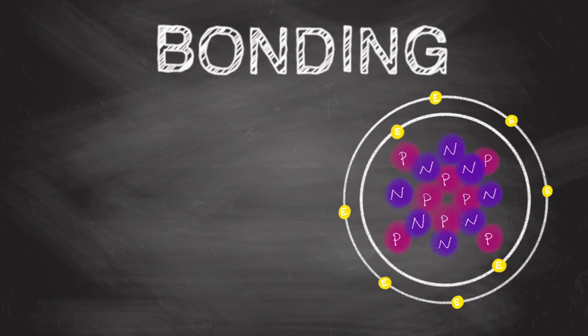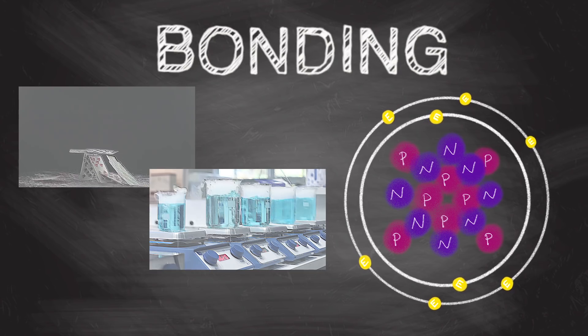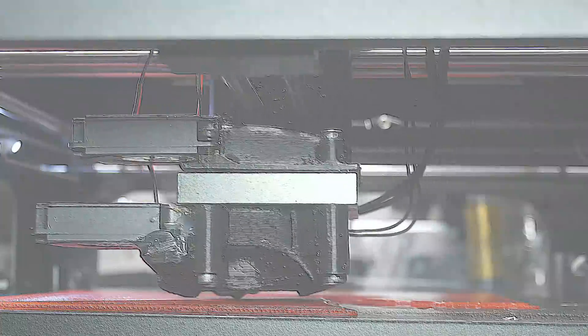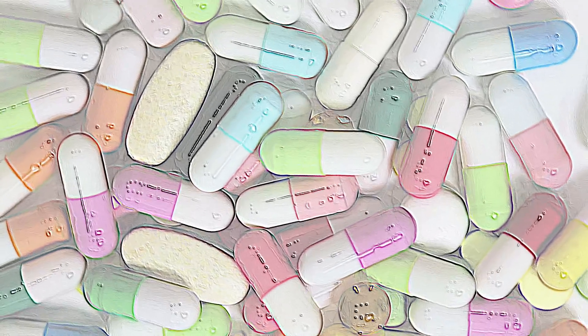Electron configuration determines how stable an element is, what its boiling point is, how likely it is to conduct electricity, and lots of other important information that we need to know when we want to make anything, from new plastics to better medicines to cleaning materials.